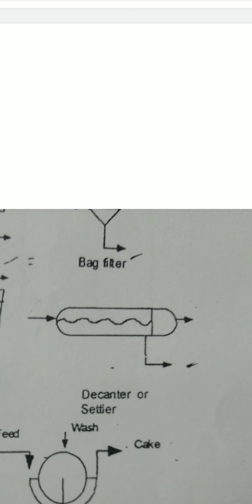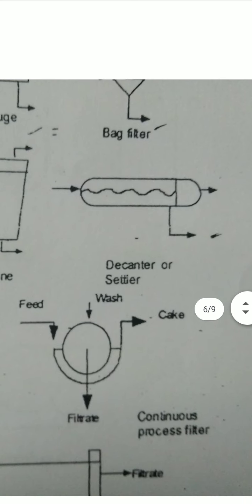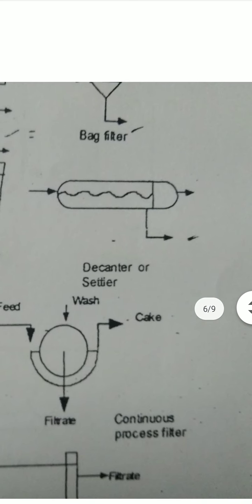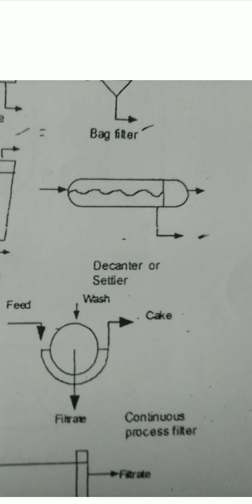Next we have the continuous process filter. Continuous process filter means filtration is continuous. Feed enters, filtrate is removed, wash is applied on top, and the cake that remains is collected. The filtrate is removed continuously and the residue — the cake — remains inside.